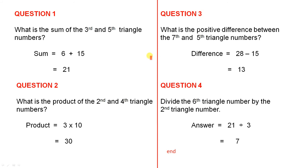Now let's look at some questions on triangle numbers. What is the sum of the third and fifth triangle numbers? So we have 6 plus 15, and that gives us 21.